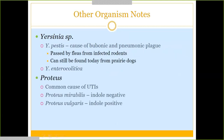Yersinia pestis is passed by fleas off of animals and was responsible for the bubonic and pneumonic plague historically. The plague still exists — infected animals like prairie dogs or other rodents can carry it, and if fleas from those animals bite you or you handle an infected animal, you can still contract it. Yersinia pestis was historically used as a biological weapon of war. Yersinia enterocolitica causes enterocolitis — intestinal illness.